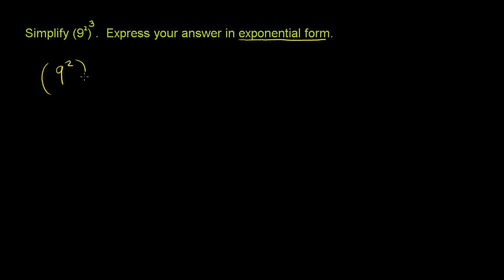So let's think about how to do this: 9 squared to the third power. The simplest way is to use the exponent rule — if you raise something to an exponent, and then raise that entire thing to another exponent, you can just multiply the two exponents. So this is the same thing as 9 to the 2 times 3 power, which is 9 to the 6th power. And we'd be done — we've expressed our answer in exponential form.